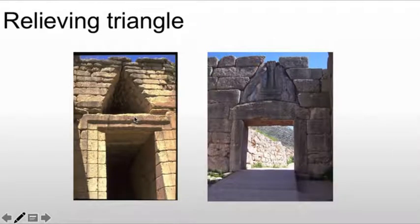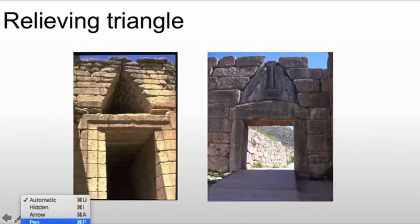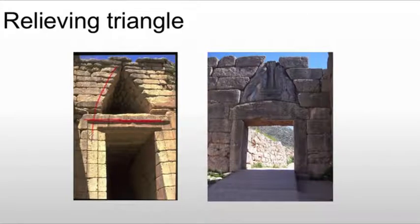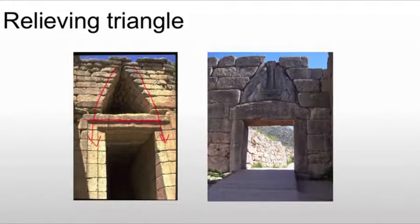To get around this in ancient times, oftentimes what we will see is a relieving triangle. The relieving triangle exists so that we can take that weight off the lintel. Here we see the lintel has nothing above it. All the weight above it, no matter how high you build, is being pushed down into the posts themselves. That means we're putting everything in compression, and being a stone building, this makes a lot of sense.